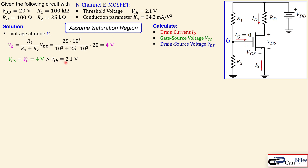There is also a second condition: VDS must be larger than VGS minus the threshold voltage. That means VDS must be larger than 4 minus 2.1, which is 1.9 volts. We will verify this shortly. These are the two conditions we need to check to confirm our assumption of saturation operation is valid.